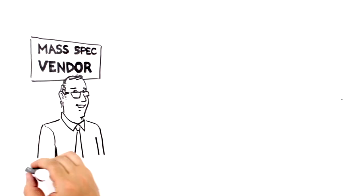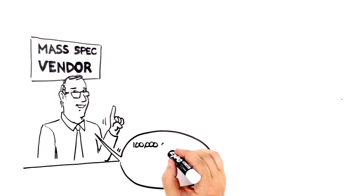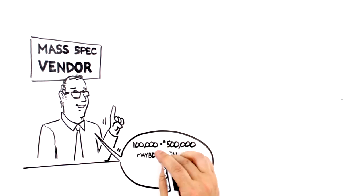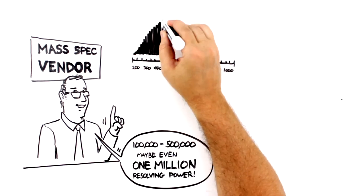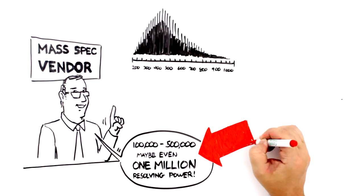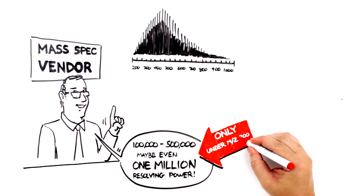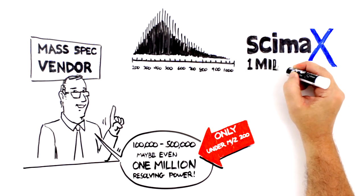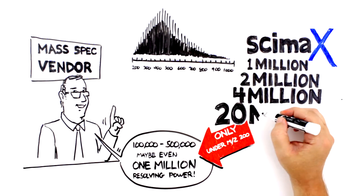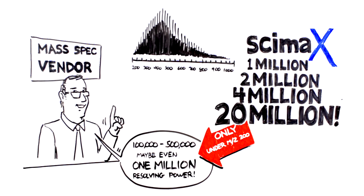Look, other mass spec vendors might claim 100,000 or 500,000 or maybe even 1 million resolving power, but that is only applicable to a small part of the mass range, typically under mass to charge 200. Symax gives you a million, or 2 million, or 4 or 20 across a wide mass range. You have the flexibility to choose what resolving power you need based on the problem at hand.